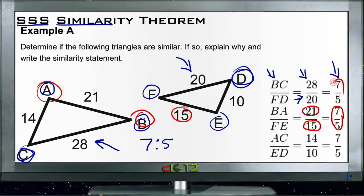If we take a look at the final side, we have AC, which is our shortest side of our bigger triangle, and it's 14 units, and then we have ED, which is the shorter side of the smaller triangle, it's 10 units, which again reduces to 7 fifths.